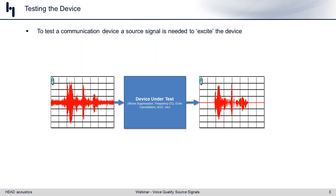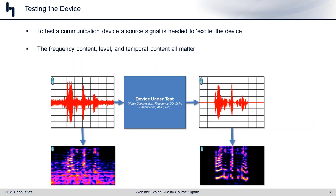The device can be quite sophisticated, typically having some form of noise suppression, spectral shaping, echo cancellation, AGC or automatic gain control, and so on. On the output, we get a clean speech signal that we want to compare to our input to analyze how the device performed.